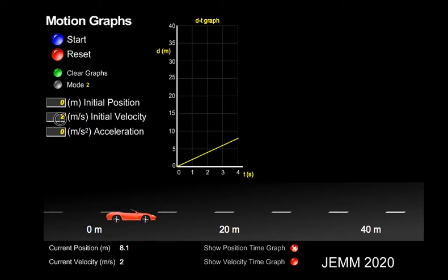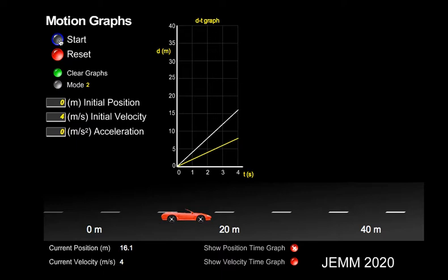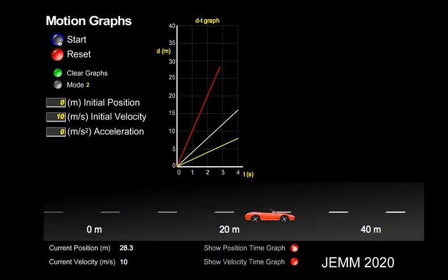Let's see what happens when we increase the speed. Notice that the slope gets steeper. If we go a little faster, we have a very steep slope. So on a position time graph, constant velocity is represented by a line. The steeper the slope of the line, the higher the velocity.